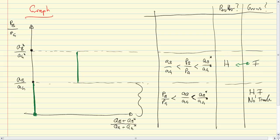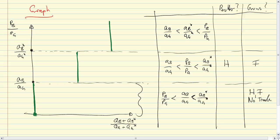In the area above AB star over AG star, we have AB over AG still less than AB star over AG star, which is now less than PB over PG. The relative price of butter is higher than the relative labor input requirements for butter in both countries, which means both countries produce only butter, and again there is no trade.